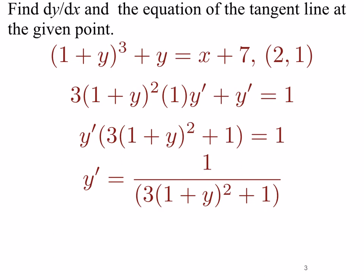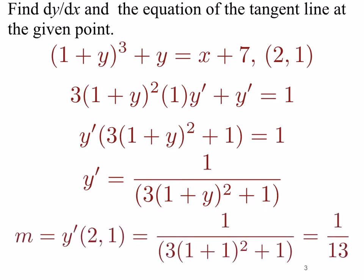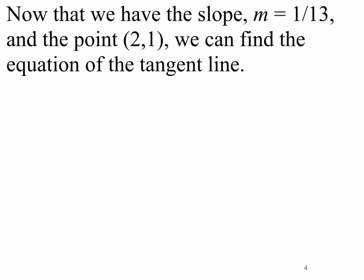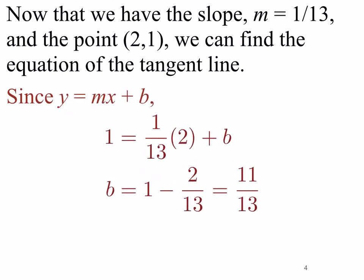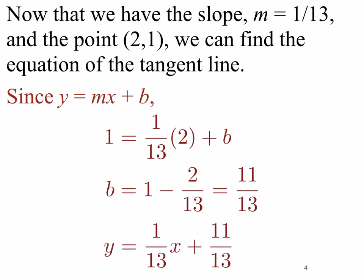We divide by the quantity (3(1 + y)² + 1) to solve for y prime, so y prime equals 1 divided by the quantity 3 times (1 + y)² plus 1. Now we plug in the point (2, 1) to find the slope. We get that the slope m at (2, 1) is equal to 1/13. Using y equals mx plus b with x equals 2, y equals 1, and slope 1/13, we solve for b and get b equals 11/13. The equation of the tangent line at (2, 1) is y equals (1/13)x plus 11/13.